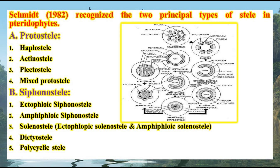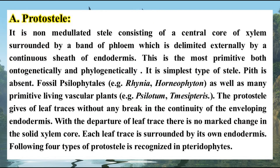These are the different types of steles found in different ferns, and this is the order of hierarchy and the order of evolution. Haplostele is the most primitive type of stele, found in primitive pteridophytes like Rhynia, while polycyclic stele is the most highly evolved. Protostele is the most primitive type of stele — a non-medullated stele consisting of a central core of xylem surrounded by a band of phloem, delimited by a continuous sheath of endodermis. It is found in some of the most primitive ferns like Rhynia.